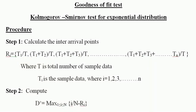Hello everyone. In this video I'm going to explain about the Kolmogorov-Smirnov test for exponential distribution using a goodness of fit test. The procedure is as follows. Step one: calculate the inter-arrival points.